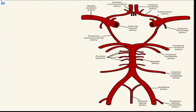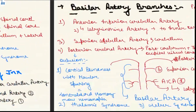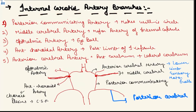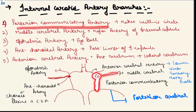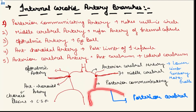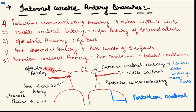The internal carotid artery branches supply the brain anteriorly. Its branches are: the posterior communicating artery, which anastomoses with the posterior cerebral artery from the basilar artery; the middle cerebral artery, which supplies majorly to the internal capsule; the ophthalmic artery; the anterior choroidal artery, supplying the posterior limb of the internal capsule; and the anterior cerebral artery, supplying the anterior cerebrum. A block in the anterior cerebral artery causes lower limb sensory-motor problems.